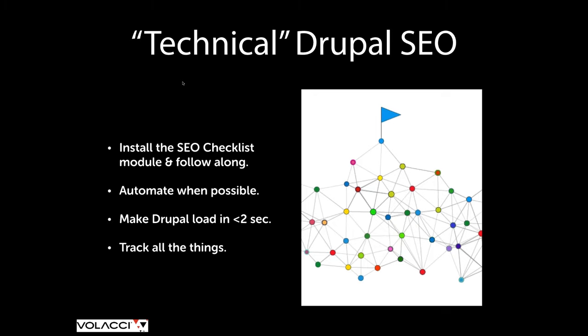Third, make Drupal load in about two seconds. It shouldn't take more than two seconds for a page to come up. In five seconds, you're going to lose 70% of your audience. We use content distribution networks, CDNs, Cloudflare, and other tools to make Drupal load as fast as possible. Search engines reward you for that. Finally, track everything — put analytics in place, use Google Tag Manager, use the free tools that are out there, and keep track of what people are doing, where they're coming from, and what they do on your site. This is the core of technical Drupal SEO.